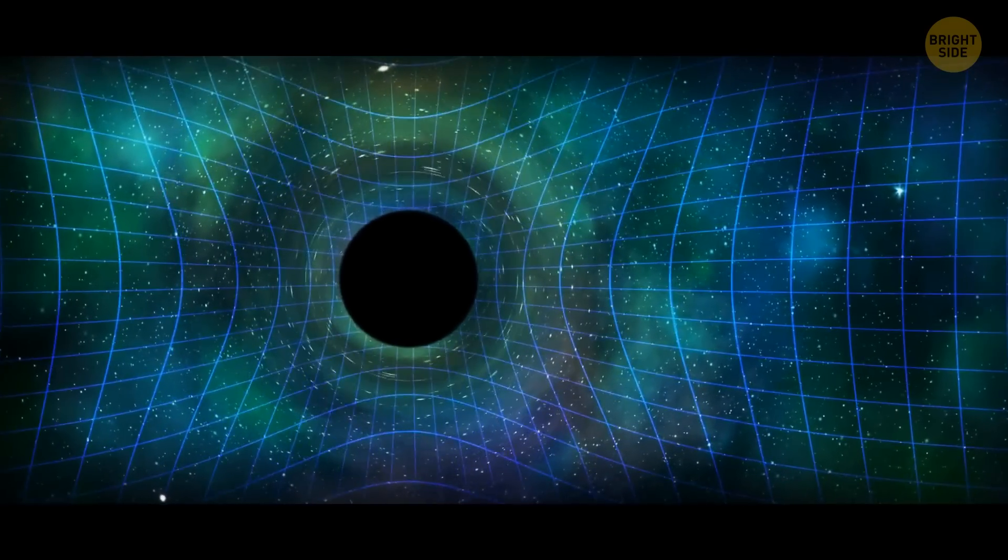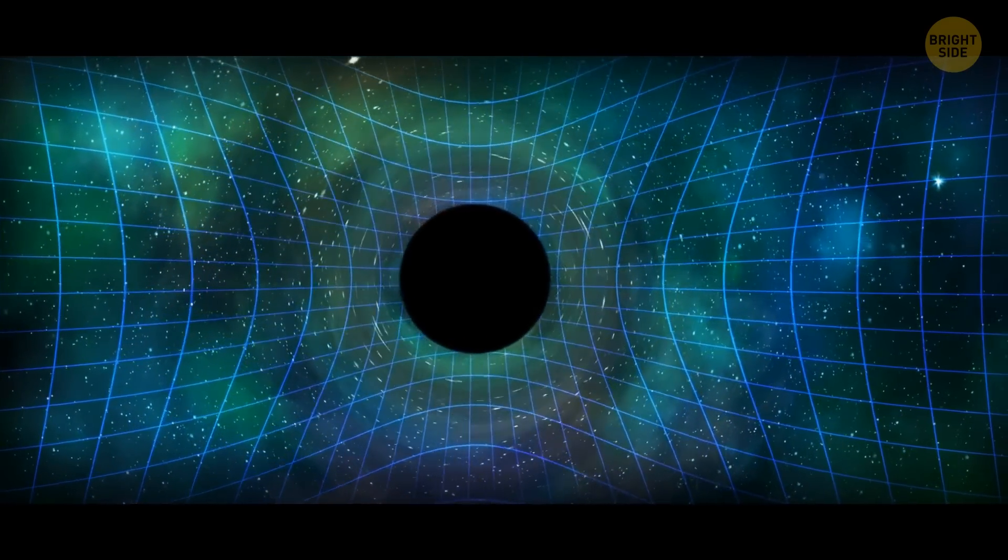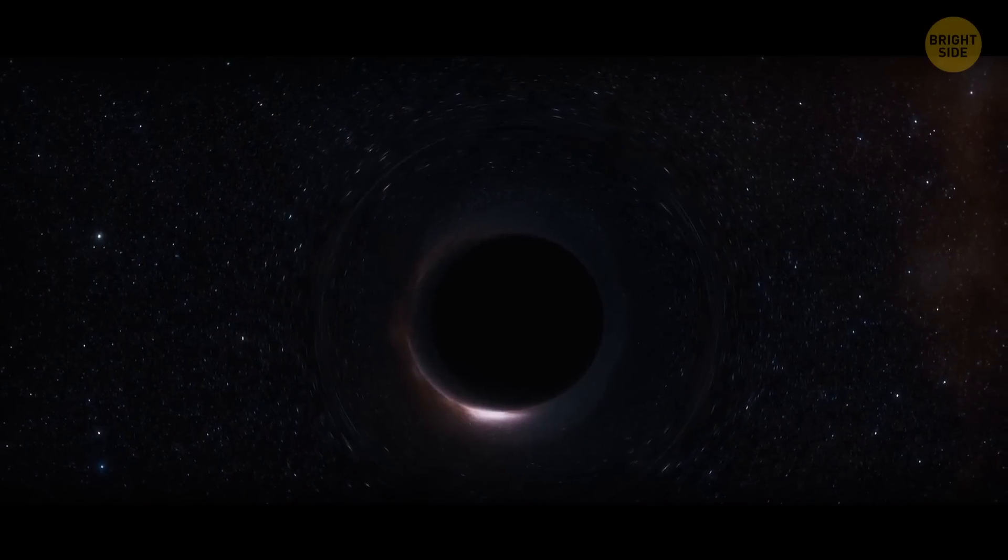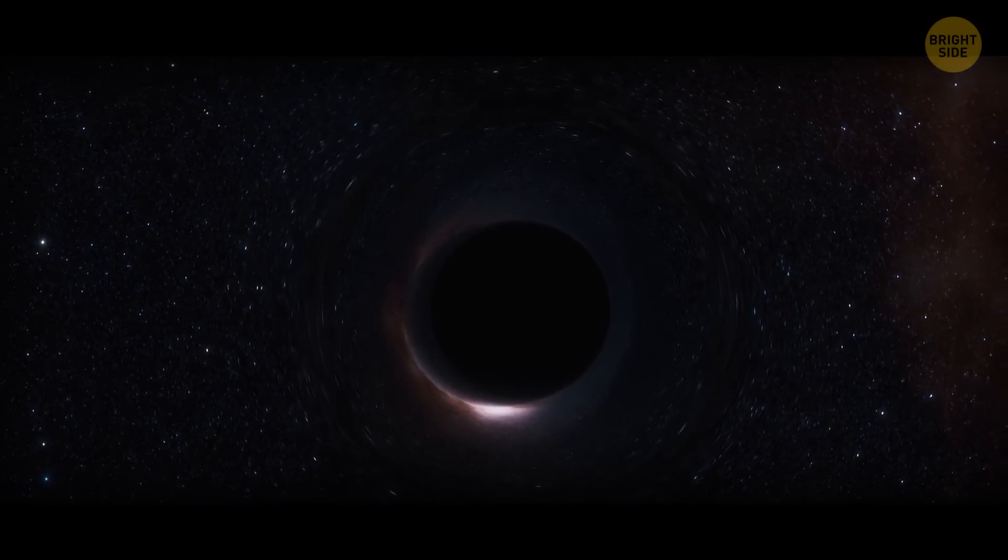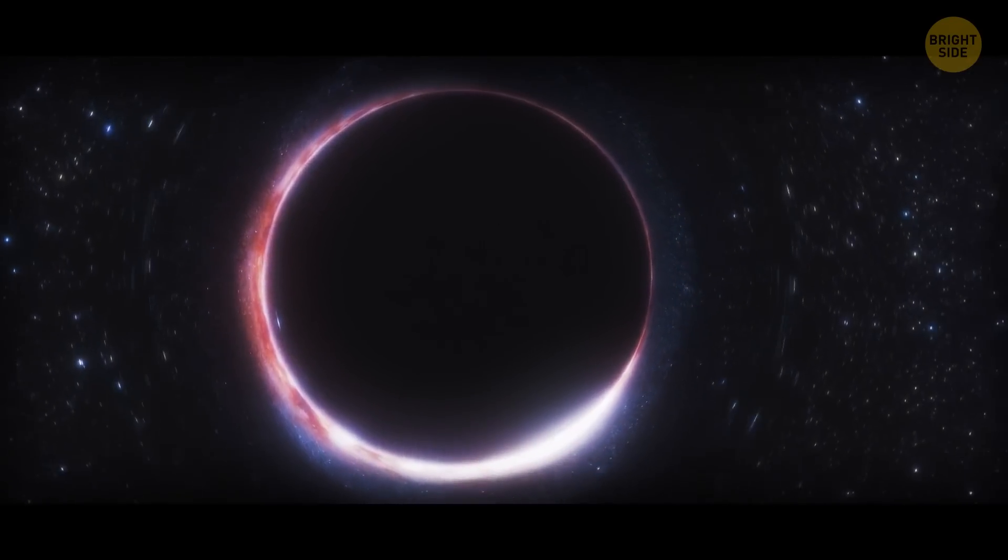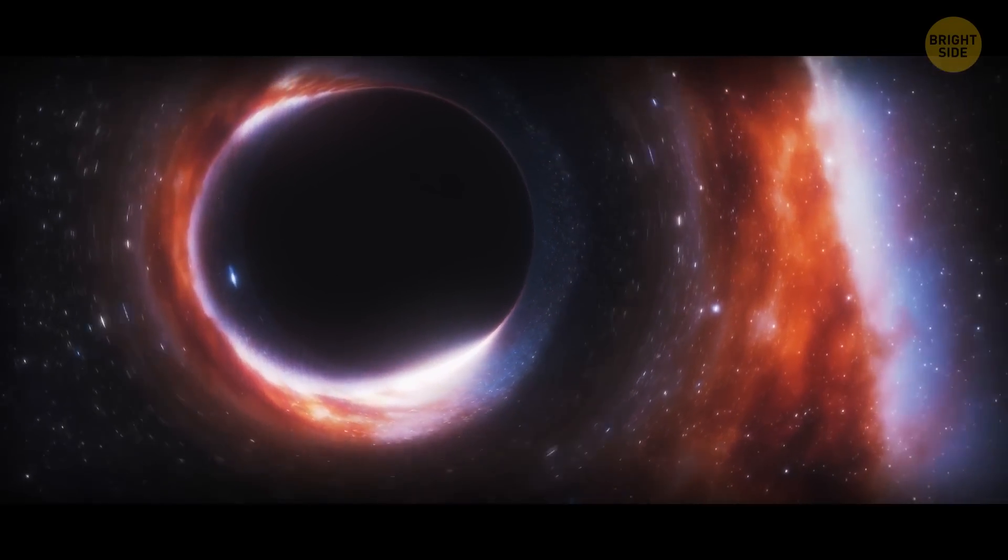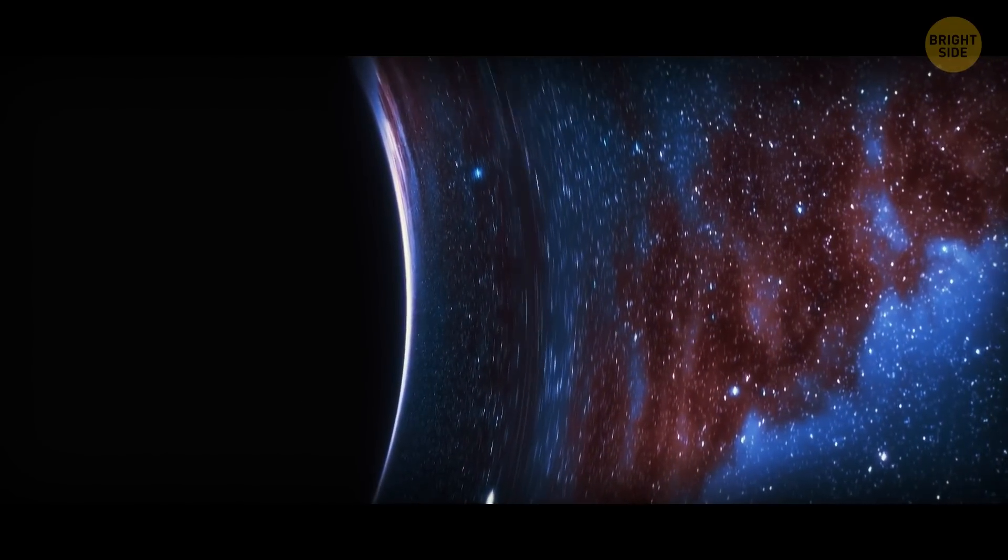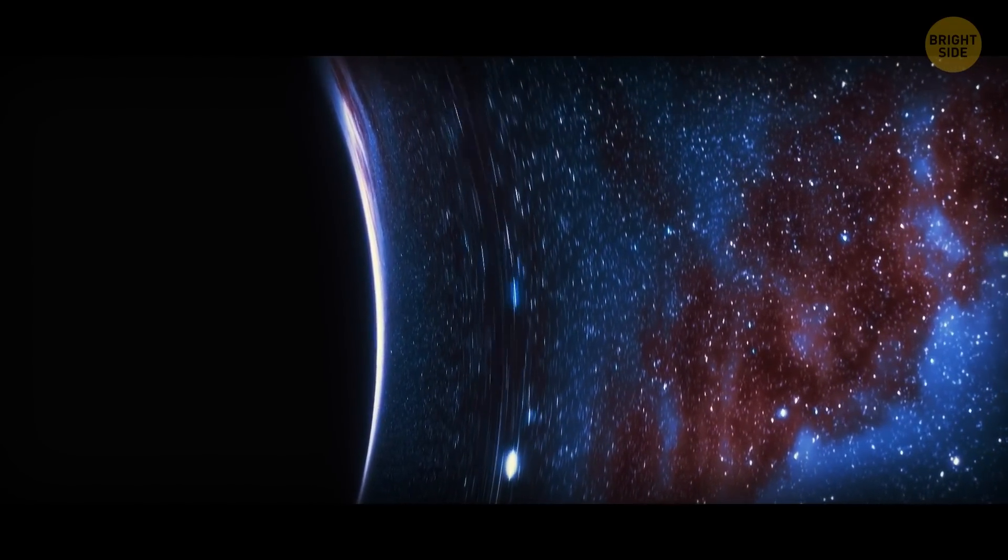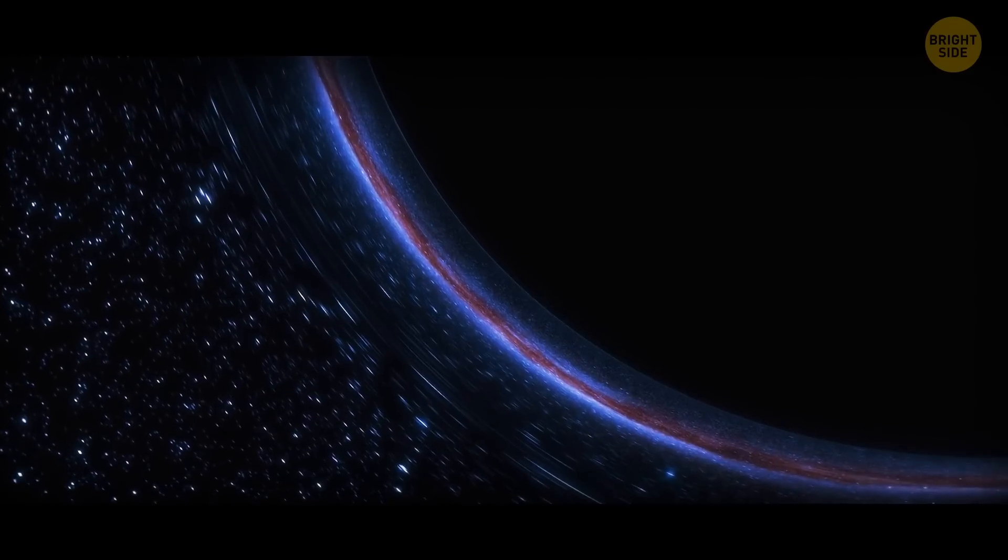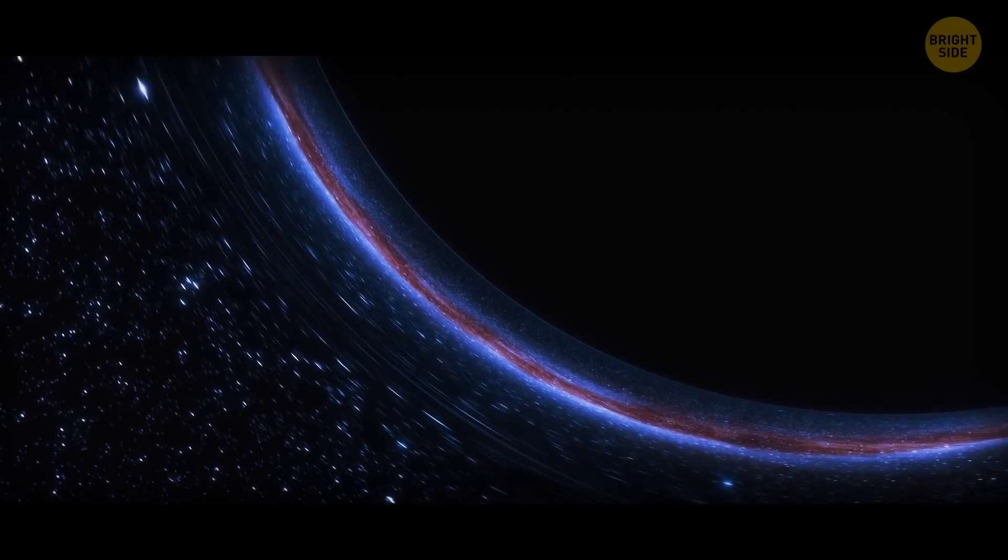As you get even closer, you would start to see some pretty mind-bending things. The gravity would cause the light around you to bend and distort, creating a sort of funhouse mirror effect. You might even see a halo of light around the black hole, known as the photon ring, or jets of high-energy particles spewing out from the black hole's poles.